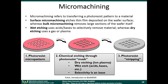You'll always have some sort of mask, whether made of photoresist or some other material. The term mask is used in two senses: the mask used in photolithography where you shine light through transparent regions, and the photoresist layer covering the wafer during etching, which protects certain areas from being etched. That term mask is used interchangeably.